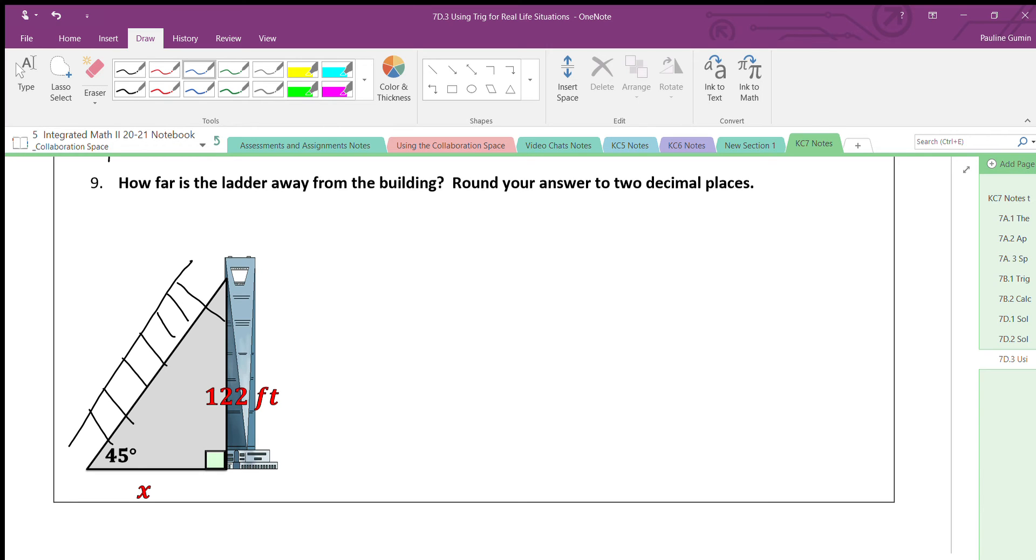Okay, so we have a 45 degree angle. Here, across from the 90 degree, we have our hypotenuse. Here is opposite. This is adjacent. So once again, I'll be using tangent because it's opposite over adjacent. Okay, so tangent of 45 degrees equals 122 over x.